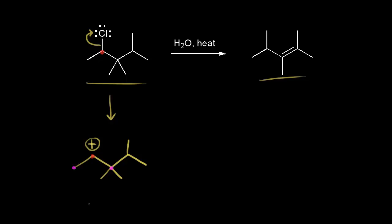We have a secondary carbocation, and if you look at it, there's a possibility for a rearrangement. We could take one of the methyl groups on the carbon in magenta on the right and move it over to the positively charged carbon — a methyl shift. The reason we get a methyl shift is that it creates a more stable carbocation. Now there's only one methyl group on this carbon, and we just moved a methyl group to the carbon in red.